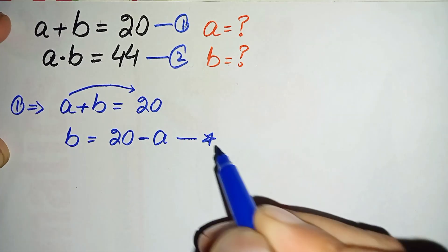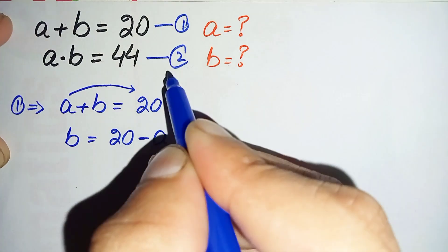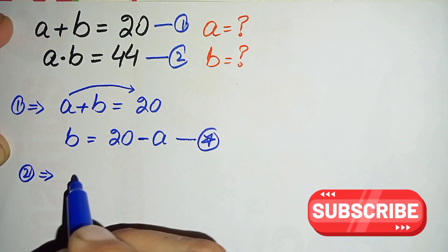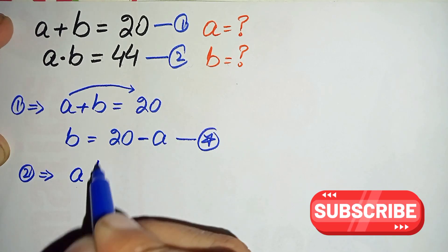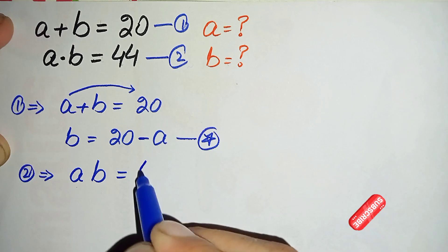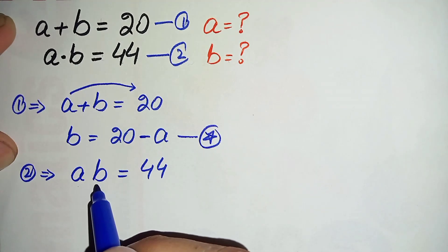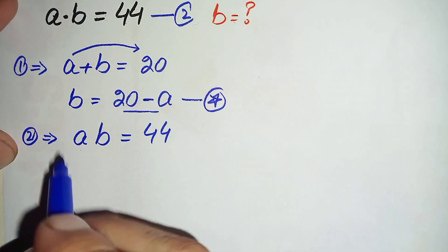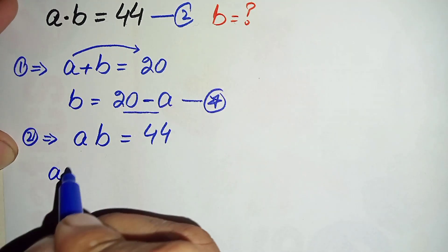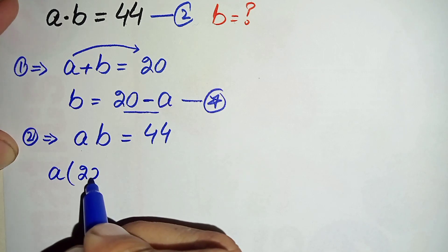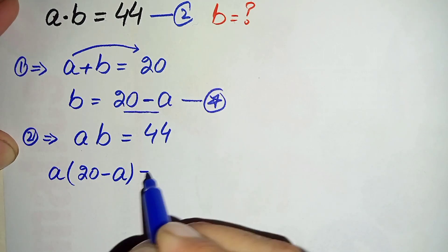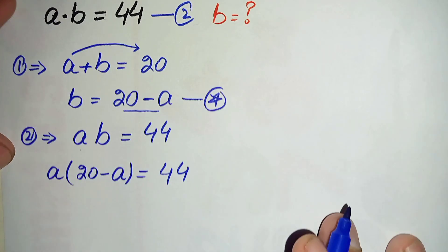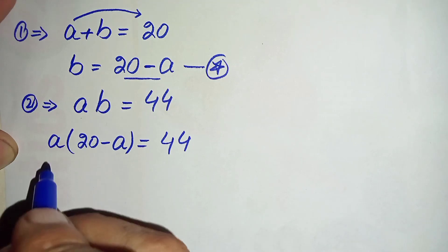Now we take equation number two, which is a times b = 44, and replace b with its value from equation star, that is 20 minus a. So this equation becomes a times (20 minus a) is equal to 44.